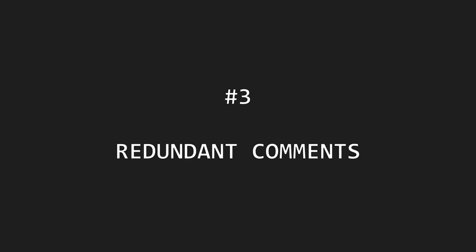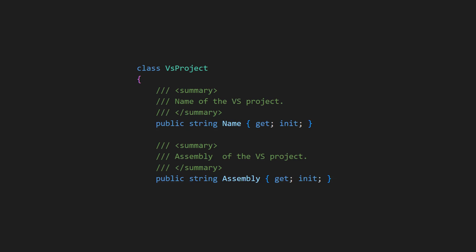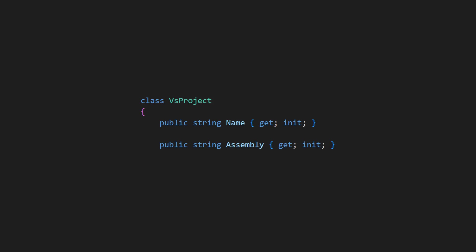Number three: redundant comments. Ambitious developers might think that good code should be documented. While it is certainly a good idea to document why some code does what it does, repeating what the code is doing is just noise in the best case and confusing in the worst case when the code starts to differ from the code comment. Therefore, remove such comments when you discover them.